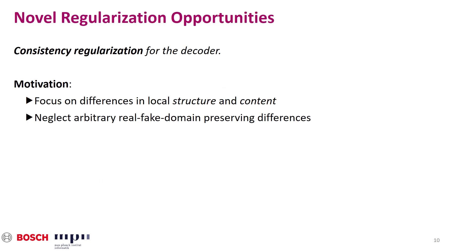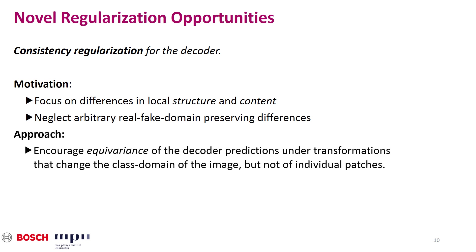The fact that our discriminator computes two-dimensional predictions allows for interesting new regularization schemes. Here, we are interested in structure awareness. When the U-Net decoder classifies local patches into real or fake, it should preferably pay attention to the semantic content and structural properties, such as objects having the right shape and having the right parts sit in the right places. For that, we may encourage the decoder predictions to be equivariant under image transformations that change whether an image is real or fake globally, but not locally.